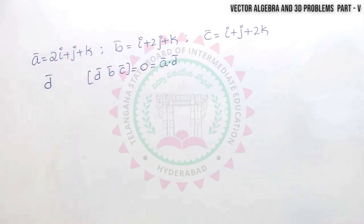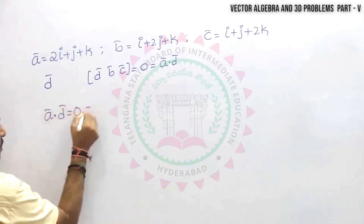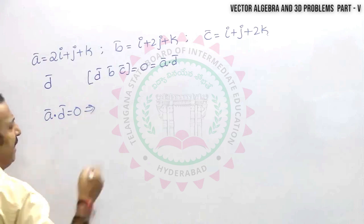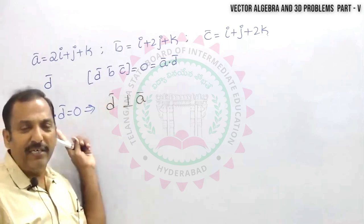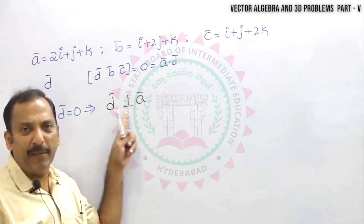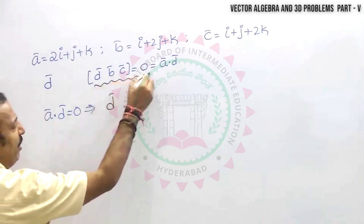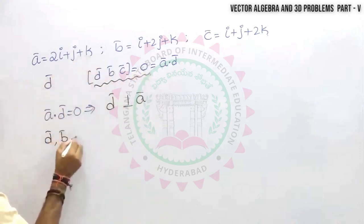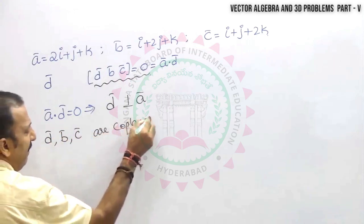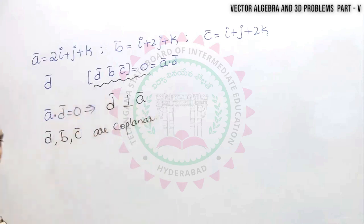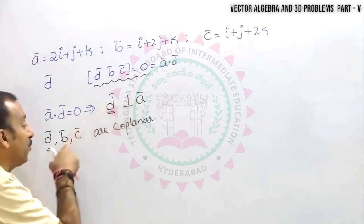a·d = 0 implies d̅ is perpendicular to a̅. The box product [d̅ b̅ c̅] = 0 implies the three vectors d̅, b̅, c̅ are coplanar. So d̅ is perpendicular to a̅ and coplanar with b̅ and c̅.